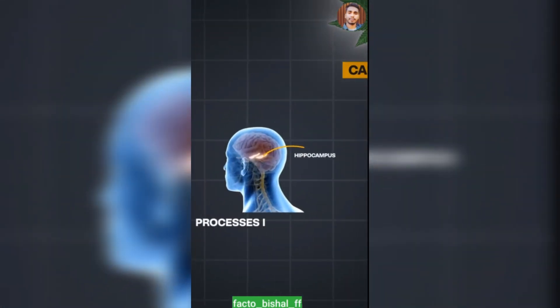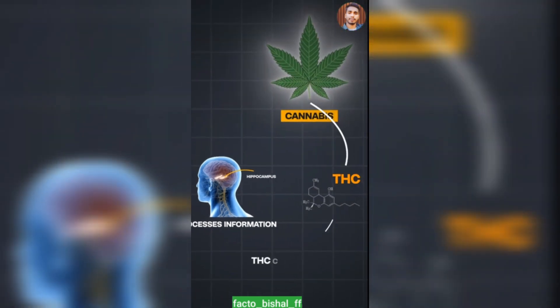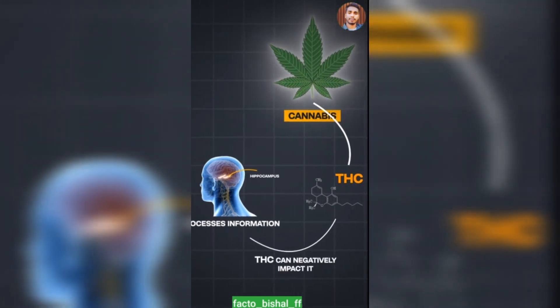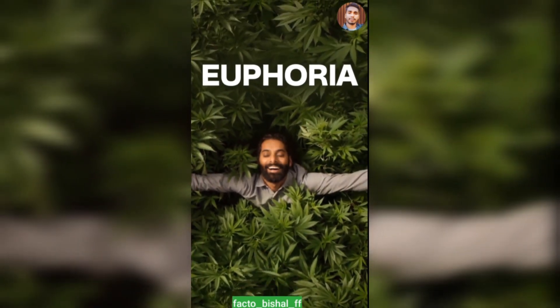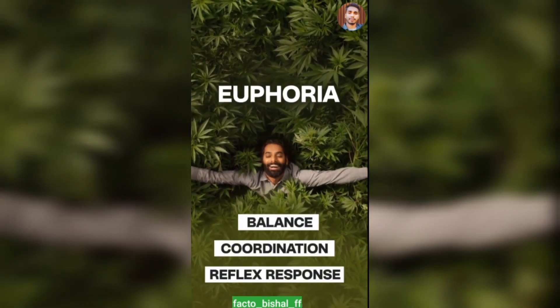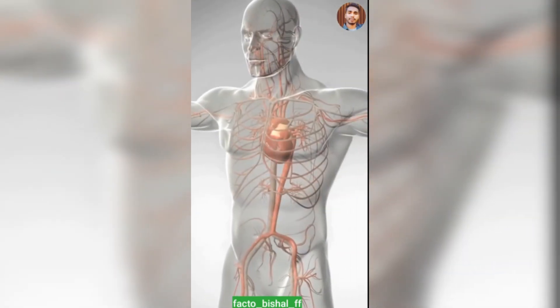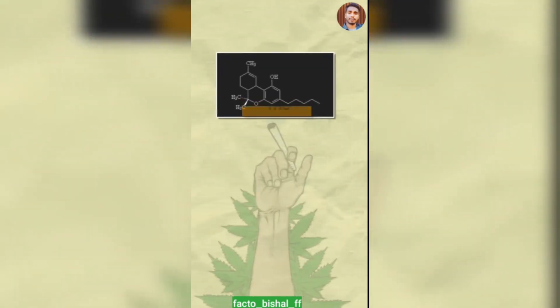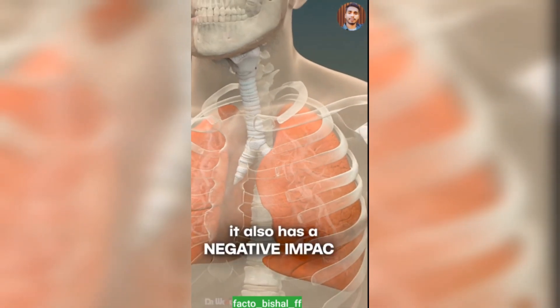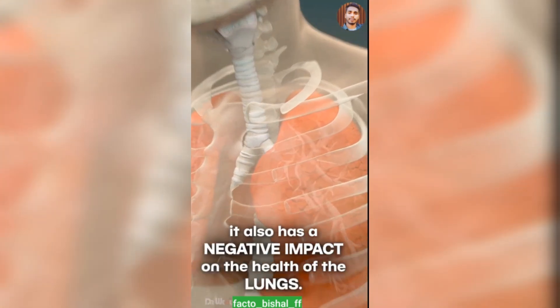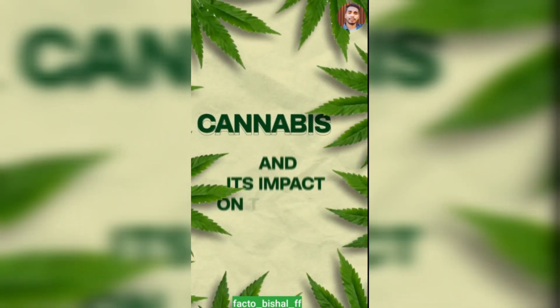THC can negatively impact brain processing and judgment. Cannabis can increase euphoria. It can also alter balance, coordination, and reflex response. The heart rate can immediately jump and blood vessels expand, causing red eyes. THC can suppress the immune system, making people more vulnerable. The lungs can also be negatively impacted. This covers the case of cannabis and its effects on the body.